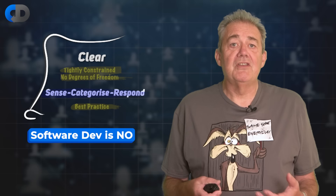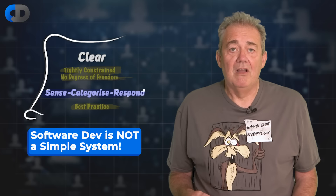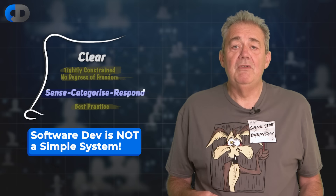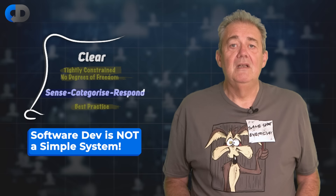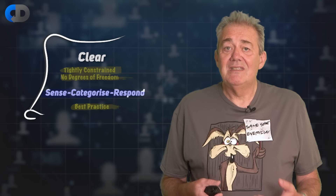In software, if we do the same thing we did last time, and last time was a success, there's no guarantee at all that this time things will work out well. There are so many variables at play. The problem may be different in subtle ways we missed. The team will be different — if not in terms of personnel, at least in terms of their experience, commitment and thinking. All of these things change over time. So software development isn't a simple, clear system. Maybe it's still ordered — so is it complicated rather than simply simple?